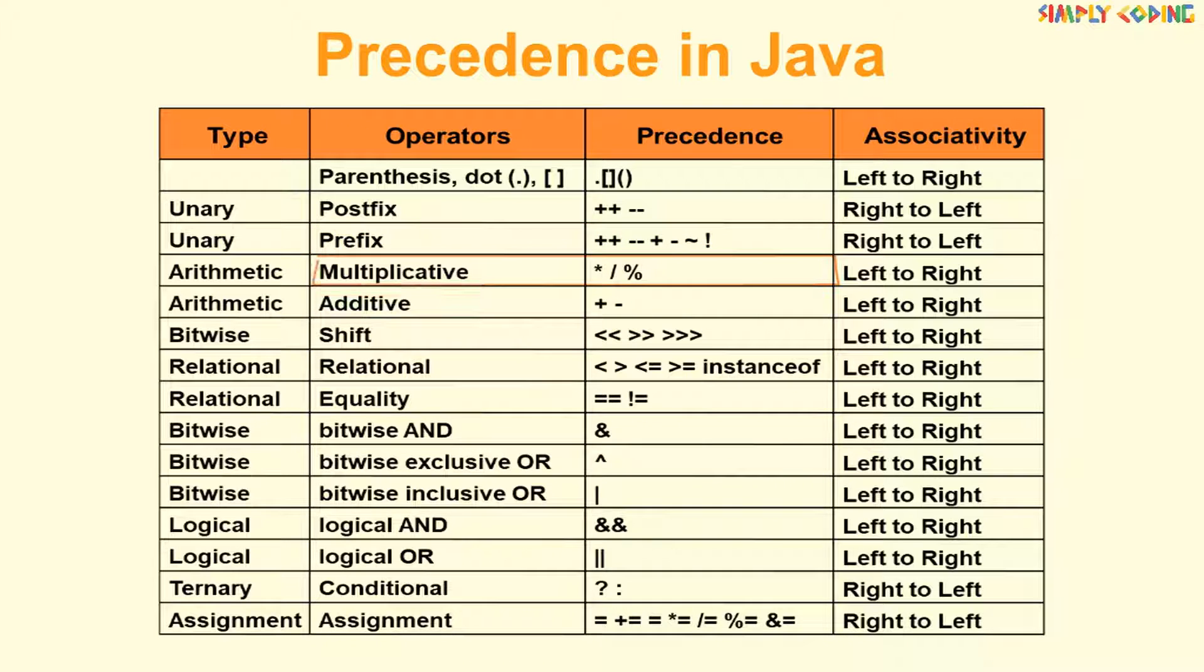Then is multiplication and division, followed by addition and subtraction. Then there are bitwise shift operators, followed by relational operators and equality. Then there are bitwise AND and OR, followed by logical AND and OR. Next is ternary operator, followed by various assignment operators.